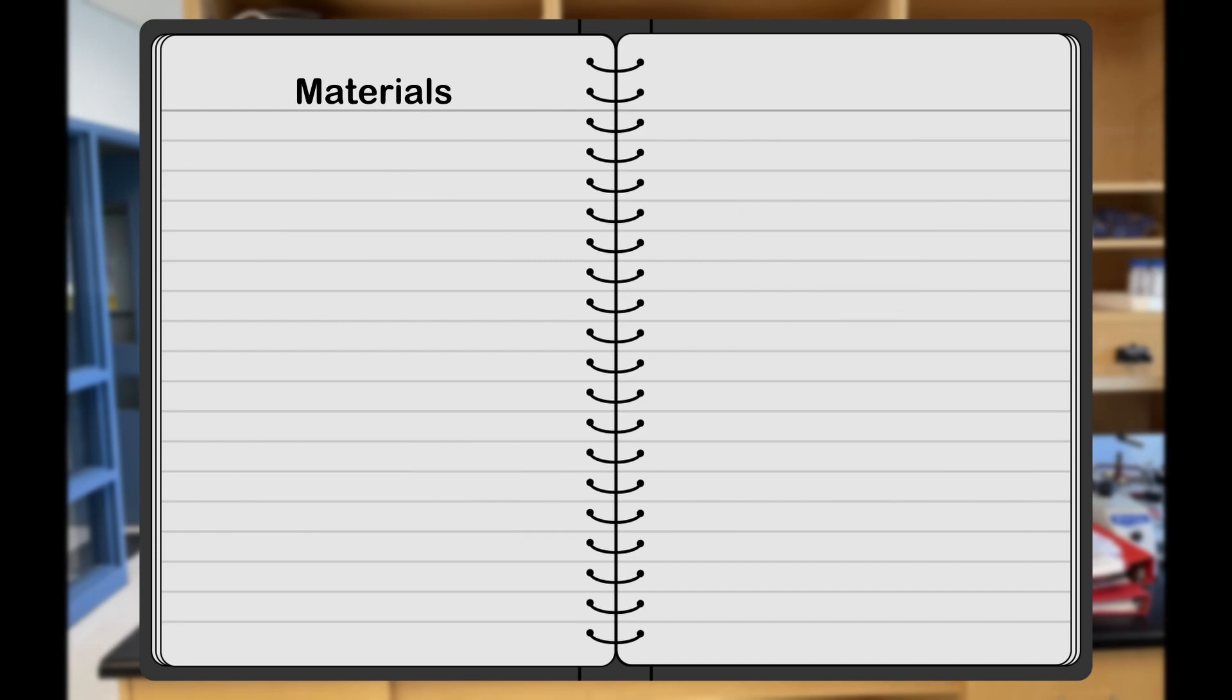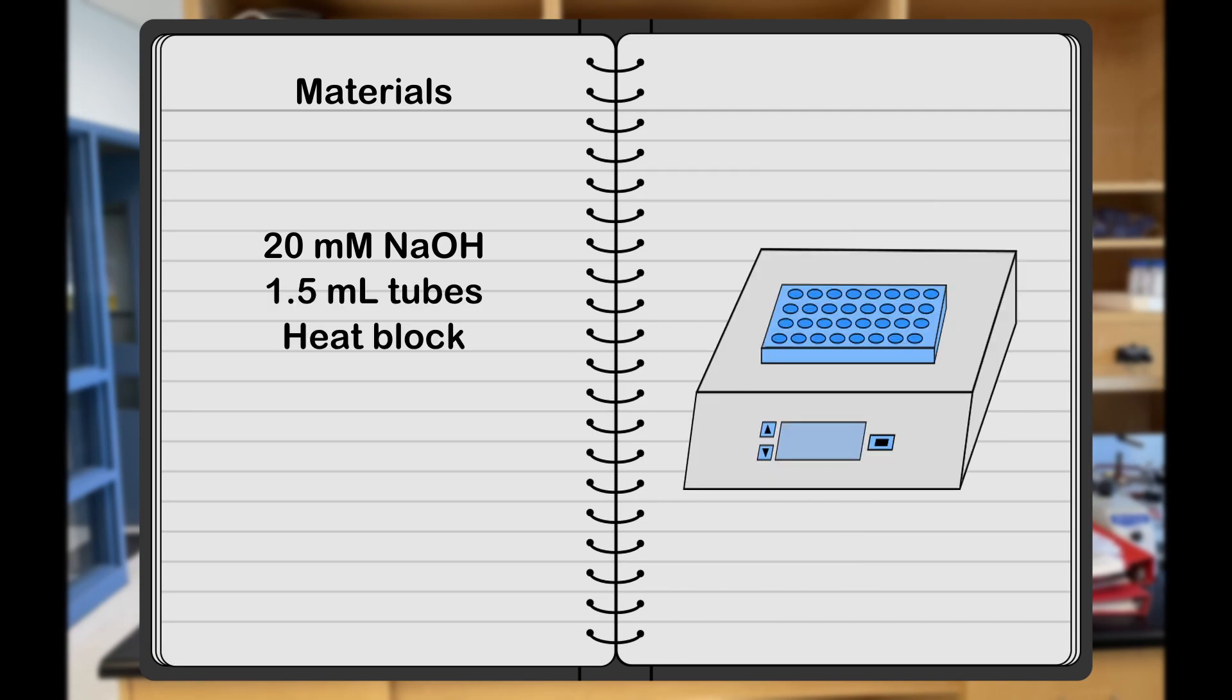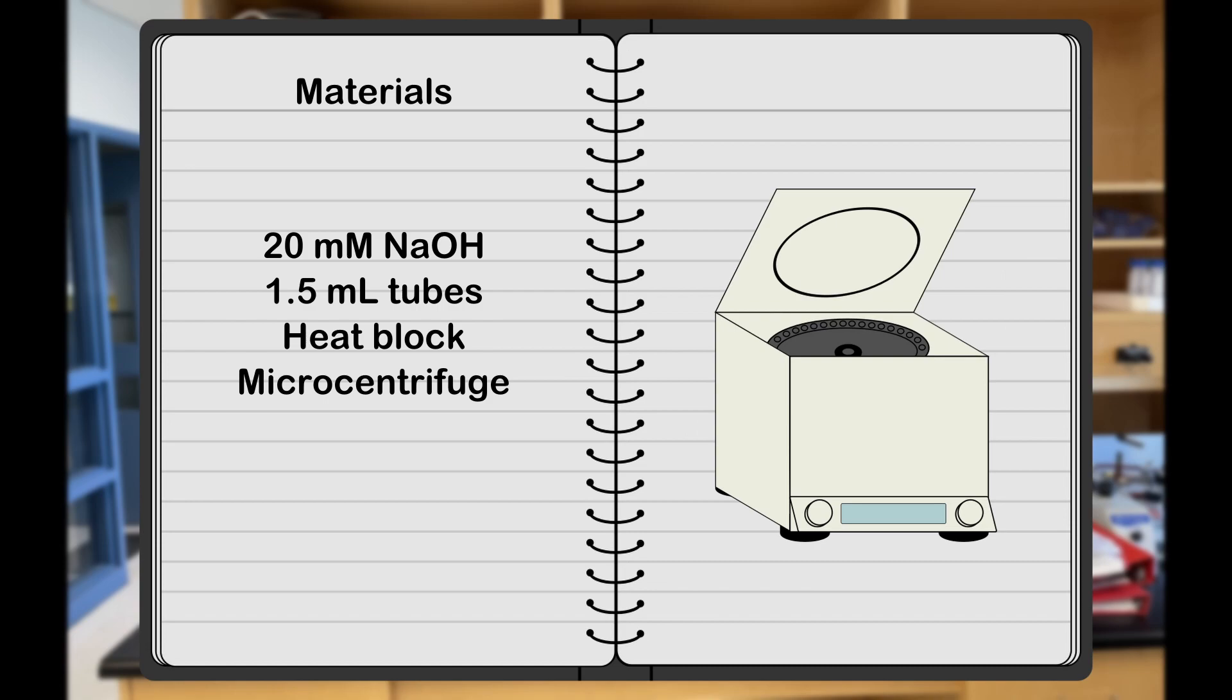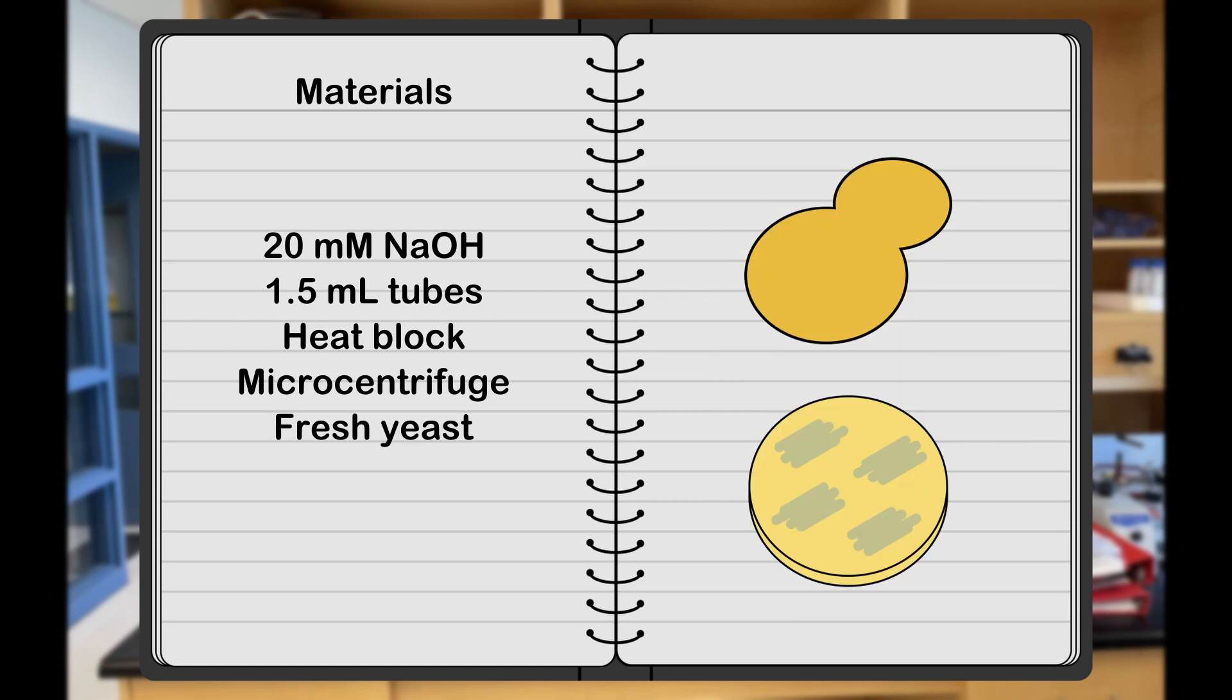The required materials are 20 millimolar sodium hydroxide, 1.5 milliliter tubes, a heat block, a microcentrifuge, and freshly grown yeast.